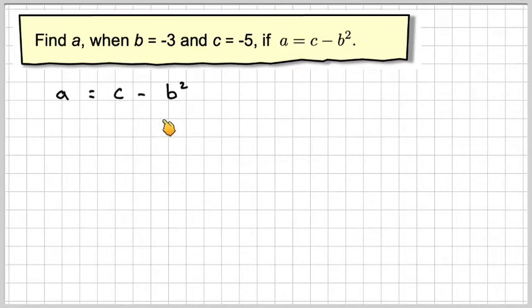So writing down a is equal to c minus b squared and then substituting in, because we've got negative numbers it's a good idea to use brackets. So we've got minus 5 minus and then in brackets minus 3 squared.